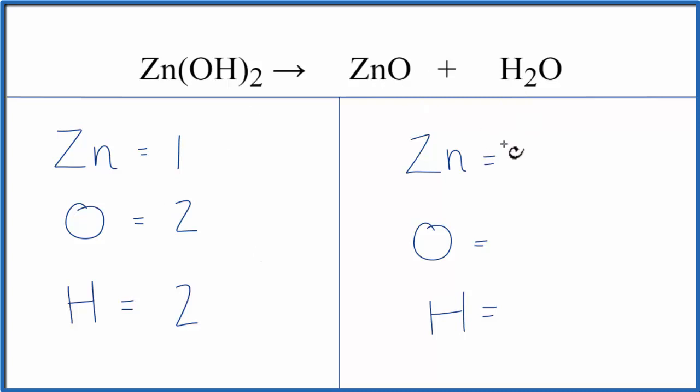On the product side, we have one zinc, we have one oxygen here, plus we have one oxygen here. So we have two oxygens and two hydrogens.